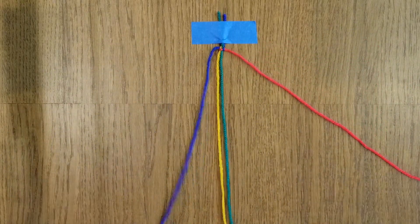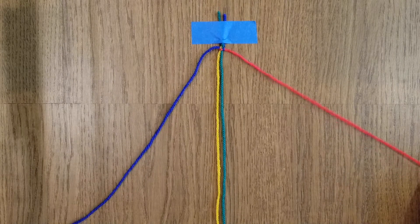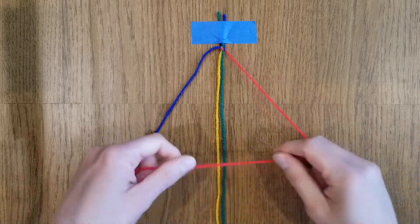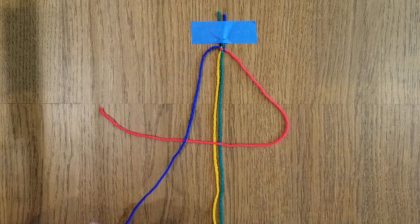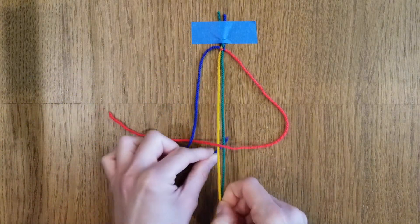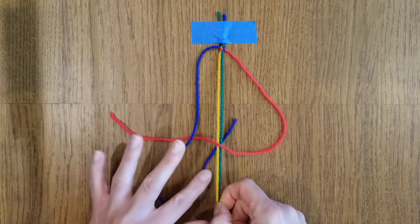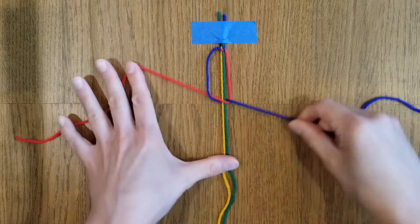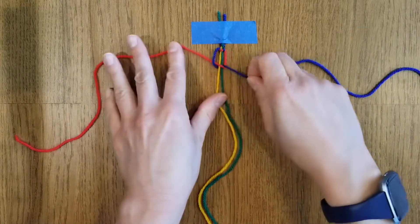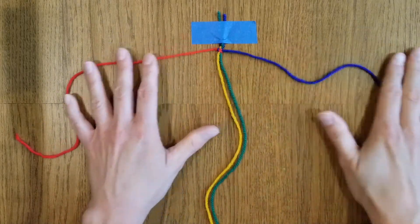To complete the square knot we'll do the exact same steps but on the opposite side. Pick up your rightmost strand, cross it over the two in the middle, pick up the leftmost strand, and bring it underneath the two in the middle and up through the loop, and then pull to tighten. It helps to secure the two strands in the middle with your thumb while you're sliding the knot up the length.